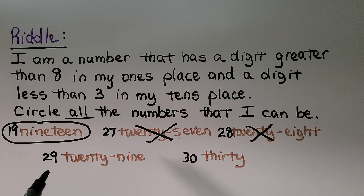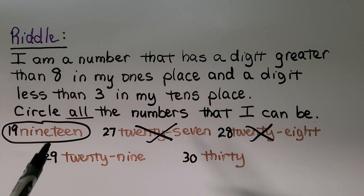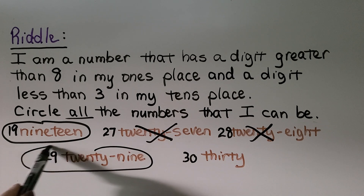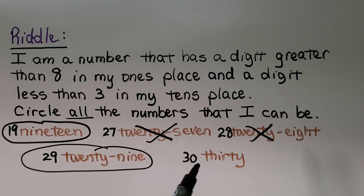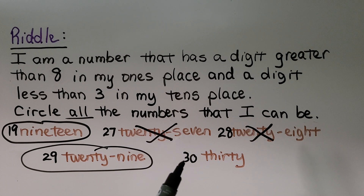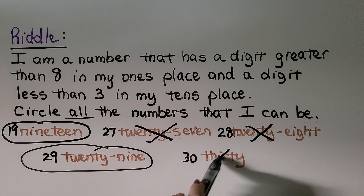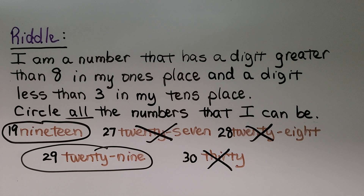Twenty-nine: nine is greater than eight. We have a two in the tens place, and the digit must be less than three — two is less than three — so 29 fits. Thirty: it has a zero in the ones place, which is not greater than eight, and three in the tens is not less than three, so it's not 30. The answer is that the number could be 19 or 29.